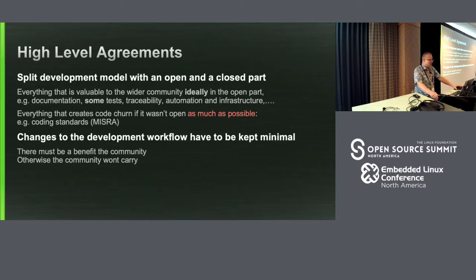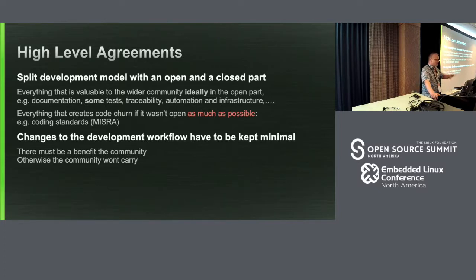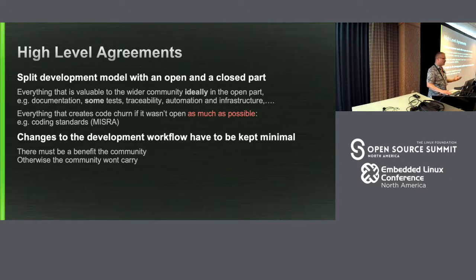We want to minimize the changes to the development workflow. Right now we have a very Git-centric workflow, and if you look at requirements management tools like DOORS today, they don't fit into that Git workflow. You'd then have to deal with all these parallel systems and keep artifacts in sync. One of the red lines is that whatever happens needs to fit into this overall workflow — otherwise the changes required by the community would be too disruptive. At the time we looked at this, we weren't sure whether this was doable or not.